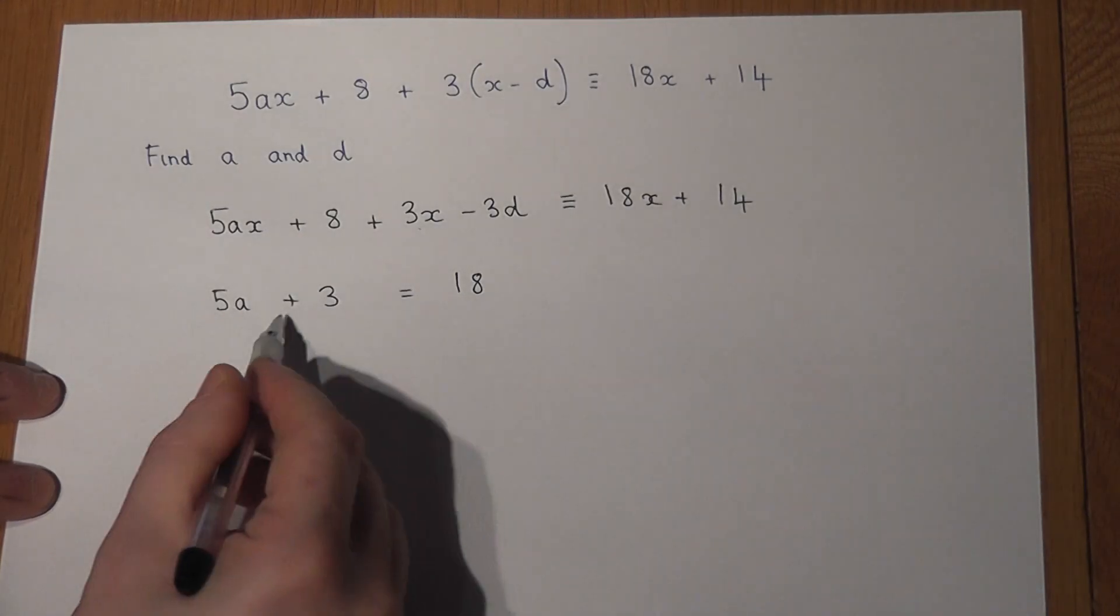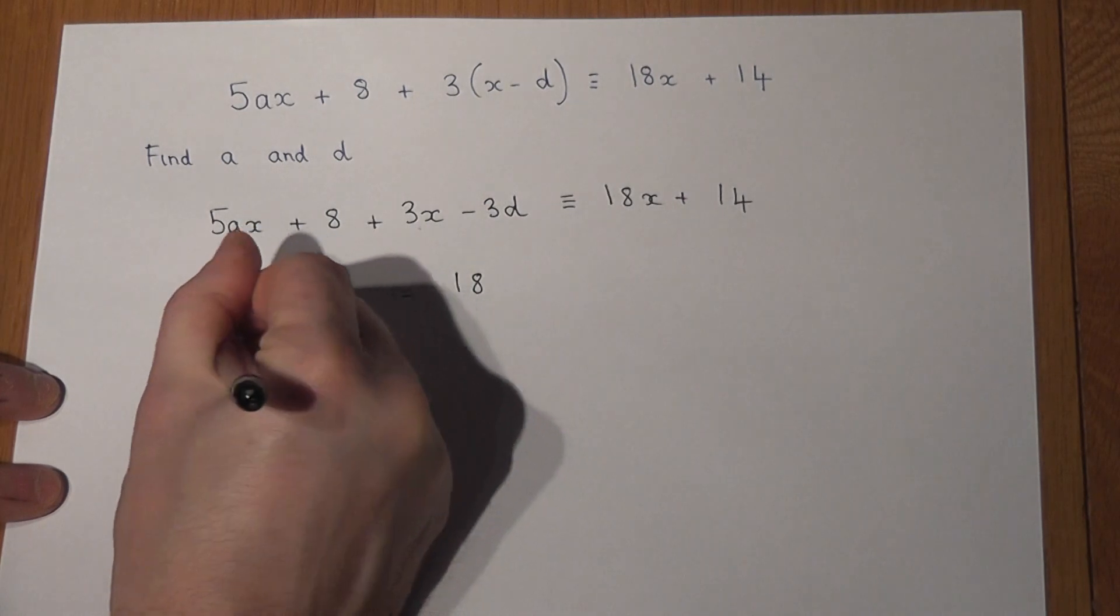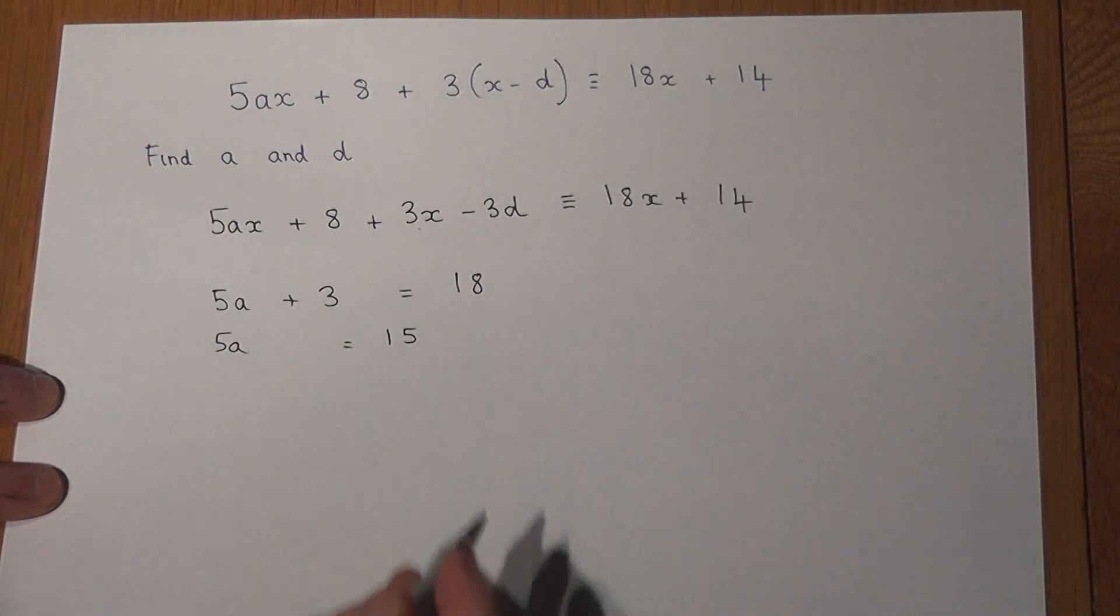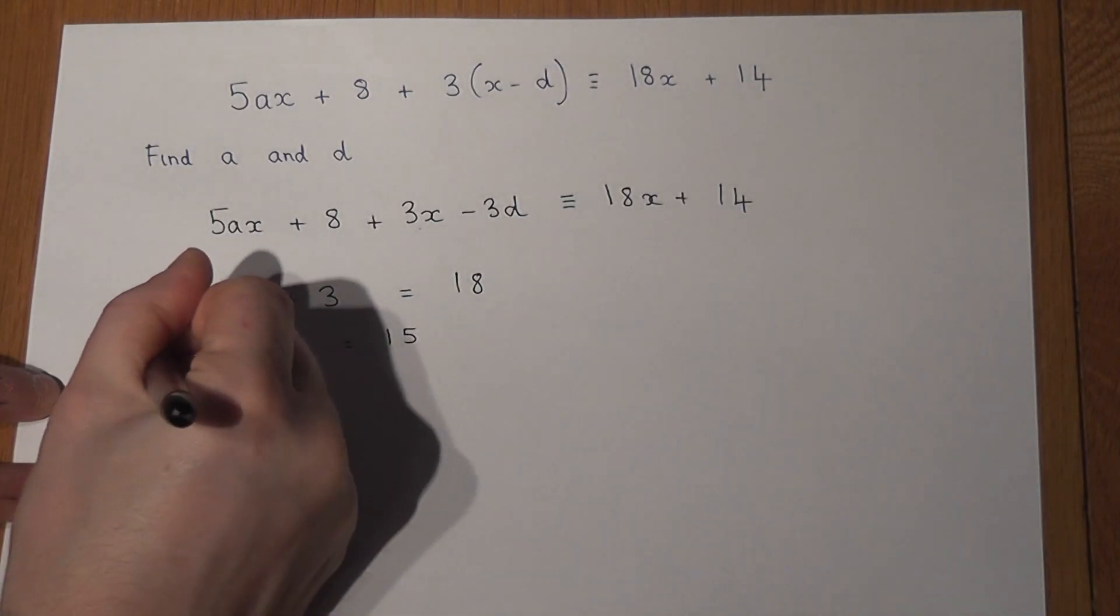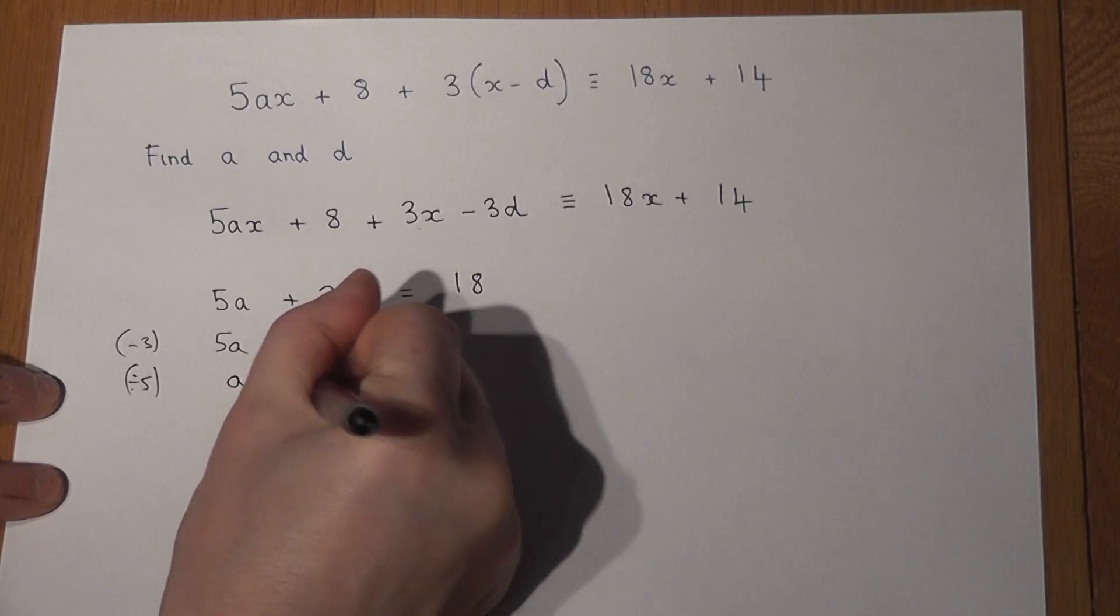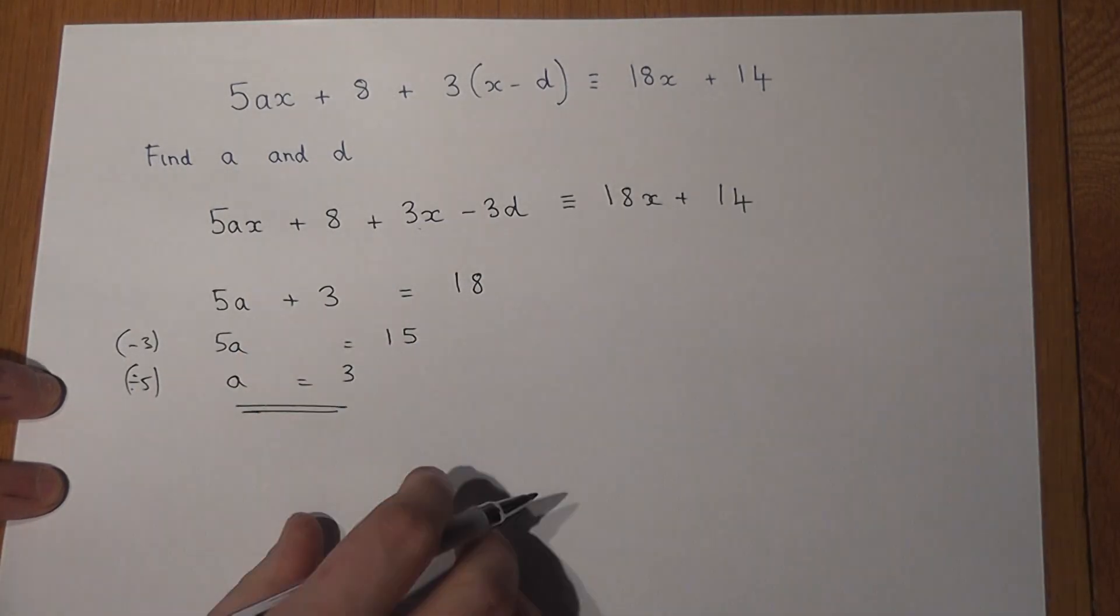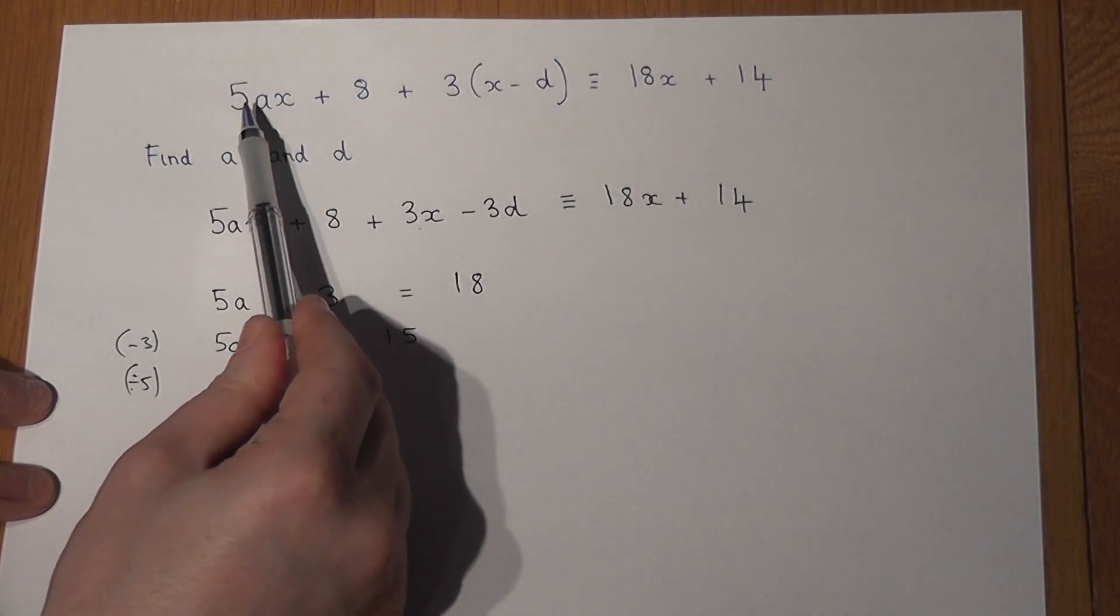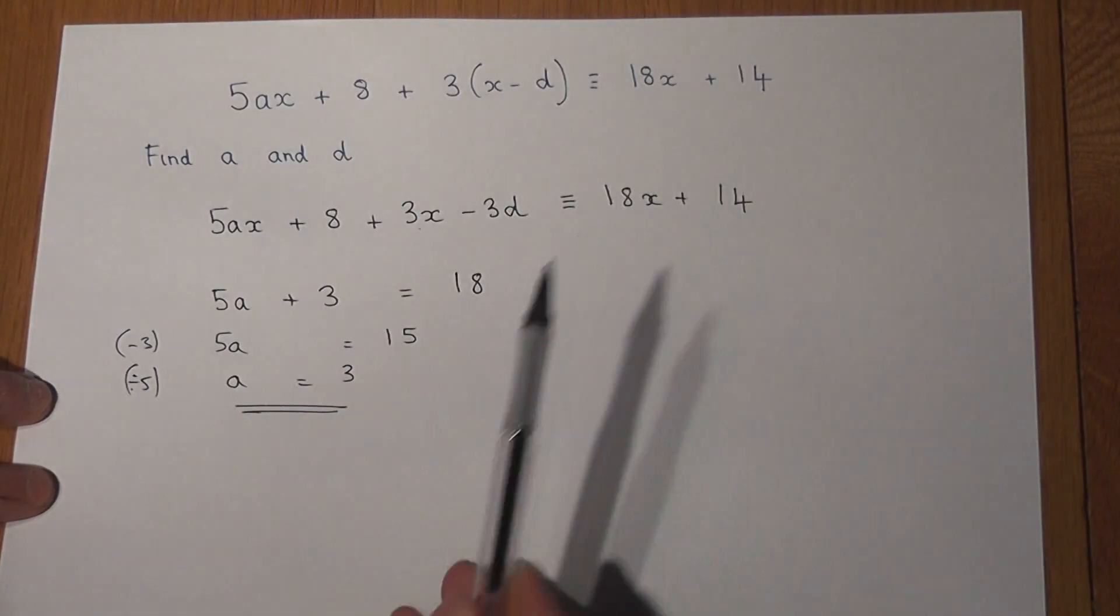I've got 5a plus 3 equals 18. This means that 5a must equal 15. If I take away 3 then divide by 5, a must equal 3. Now to check that, 5 times 3 is 15, plus 3 gives me 18.